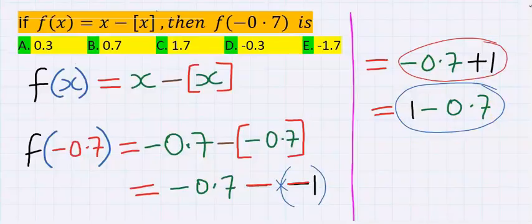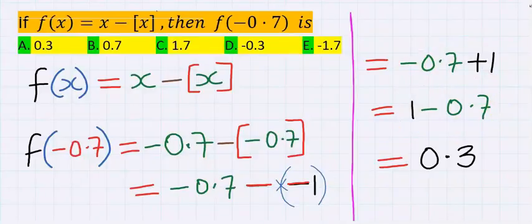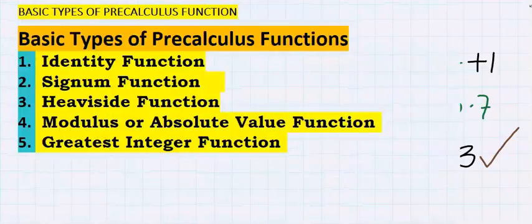Both are the same and your answer is 0.3. This is our answer and from the options our answer is A. Any mistake can make you choose any of the options.